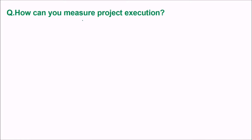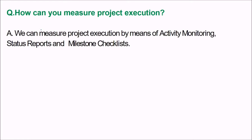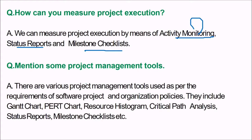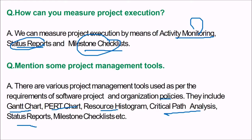How can we measure project execution? We can measure project execution by activity monitoring, status reports, and milestone checklists. What are some project management tools? They include the Gantt chart, PERT chart, resource histogram, critical path analysis, status reports, and milestone checklist — all used as per the requirement of the software project and organization policy.